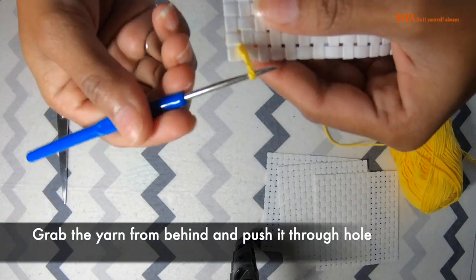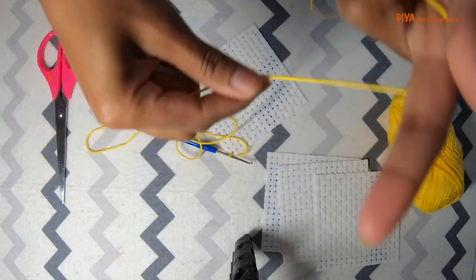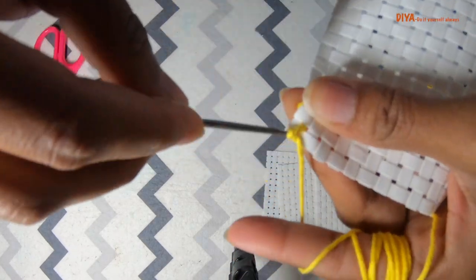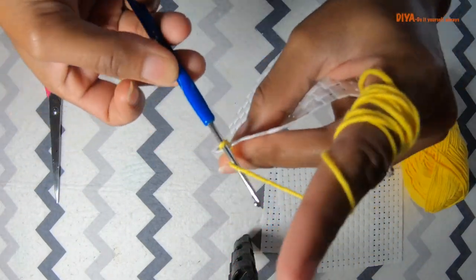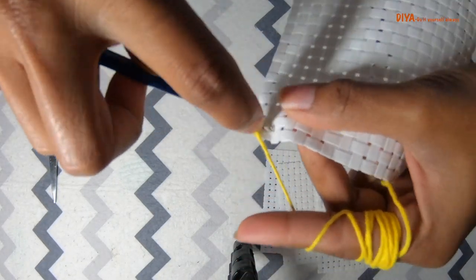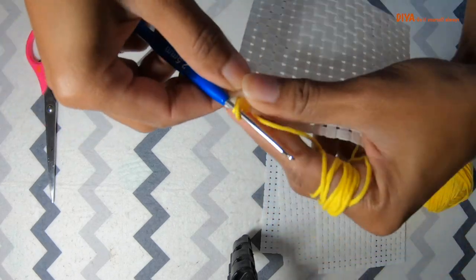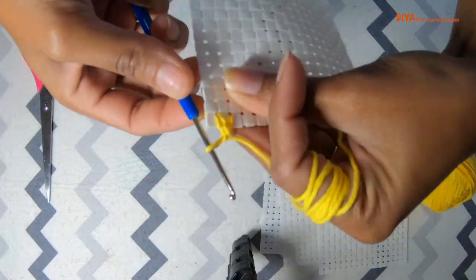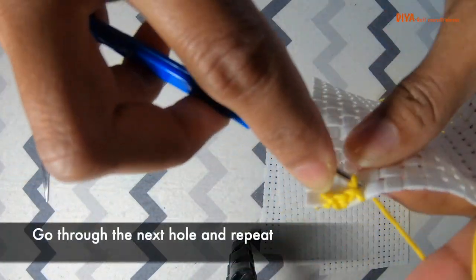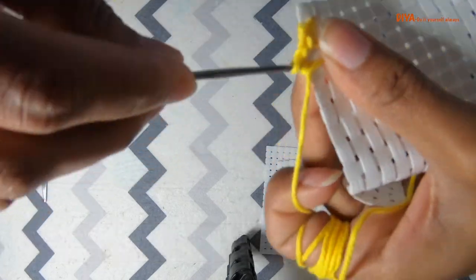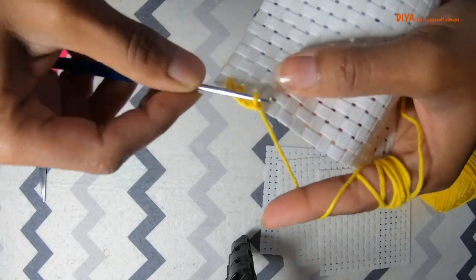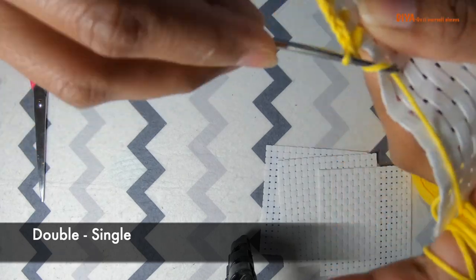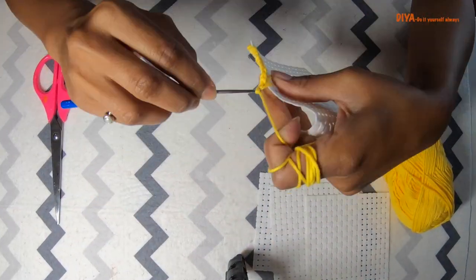This is how yarn is attached to the hook. For your comfort, you can roll yarn on your finger like this. It will give you a nice grip to yarn. This is how we make the first loop. Now we'll go through the next hole and repeat the process, but here you have two loops. Push the yarn from both the loops like this and then again make a single loop. Same way we need to cover all the sides.